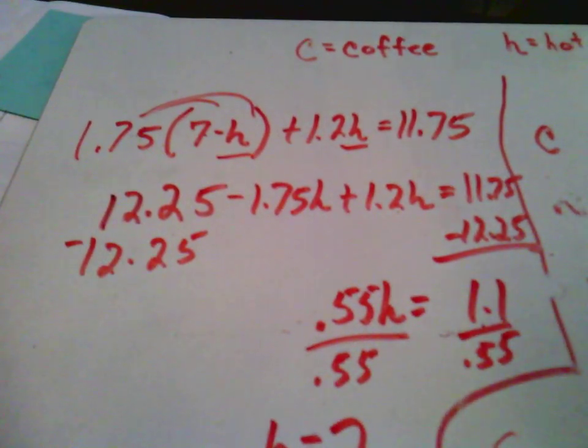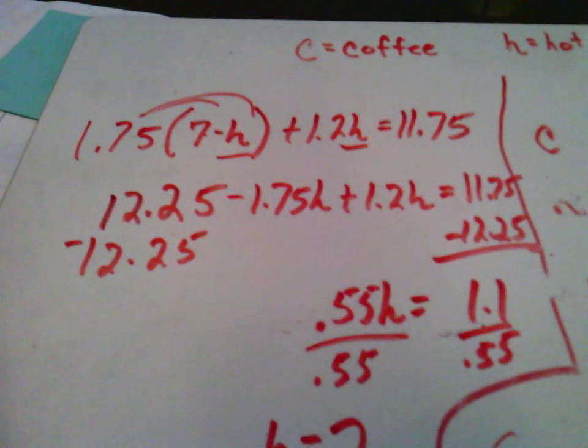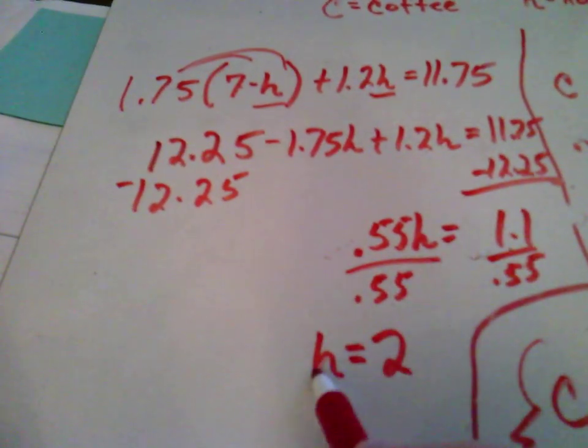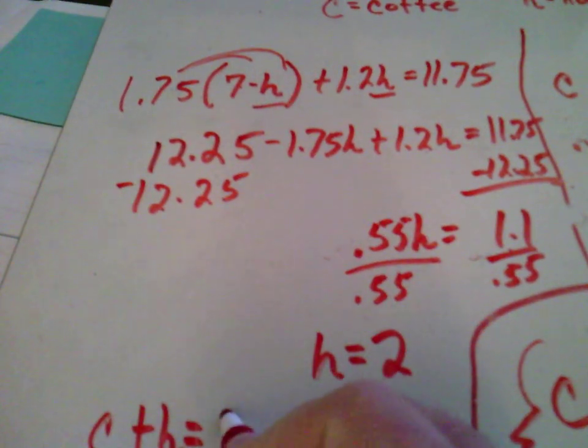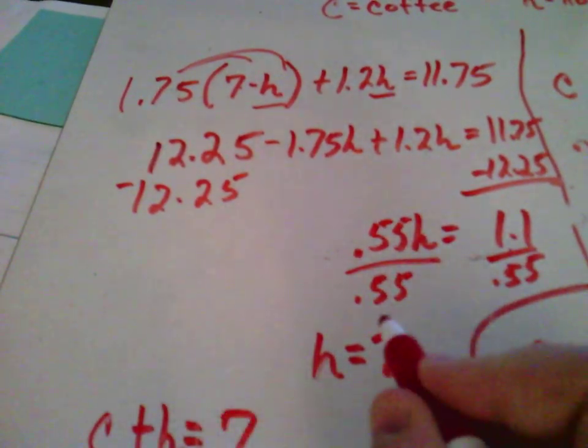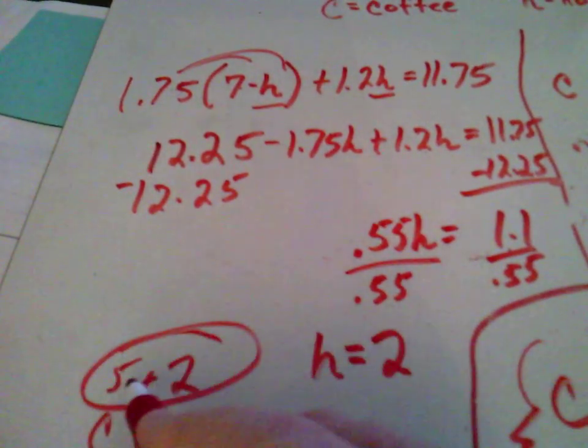Which means, in terms of our problem, two hot chocolates were purchased. H equals 2. Well, our original problem was what? It was C plus H equals 7. Well, if you purchased two hot chocolates, you had to have purchased five coffees. There are our solutions. C equals 5. H equals 2.